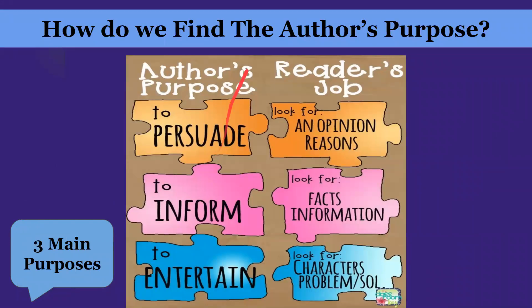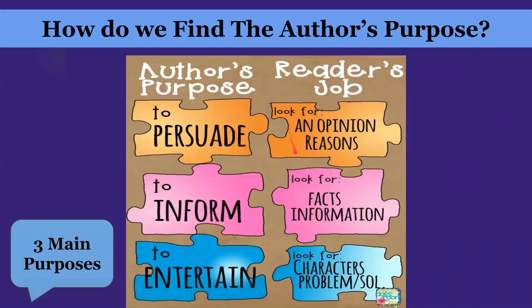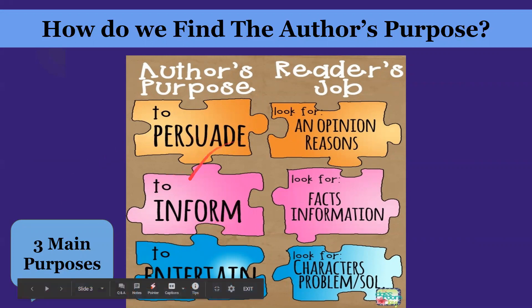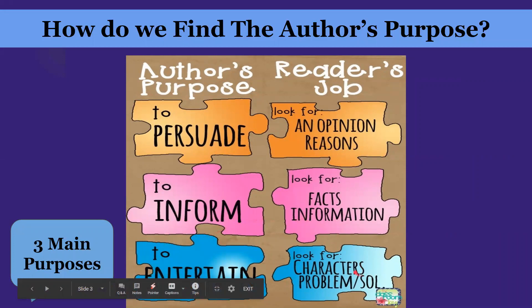How do we find the author's purpose? We have three main purposes: persuade, inform, and entertain. For persuading, you want to look for an opinion and reasons — like 'you should do this because of this.' For inform, look for facts or information, like 'one in 10 hamsters are cute.' And for entertain, look for characters with a problem and a solution — words like 'once upon a time' mean it's a story.